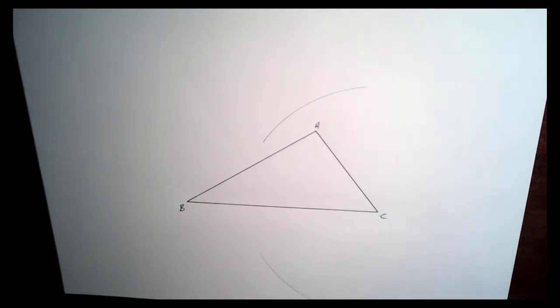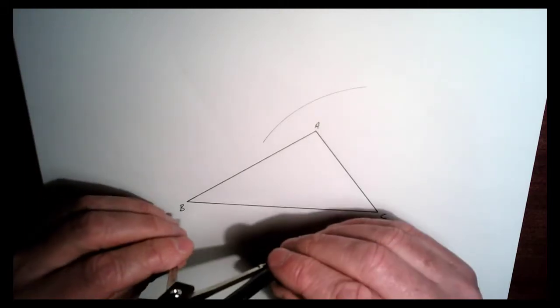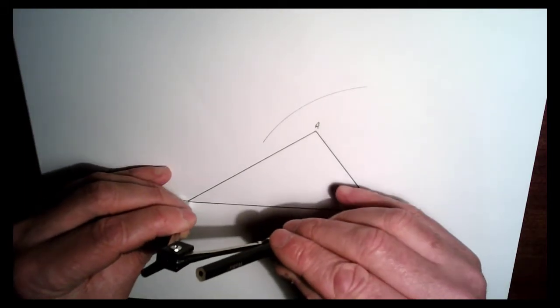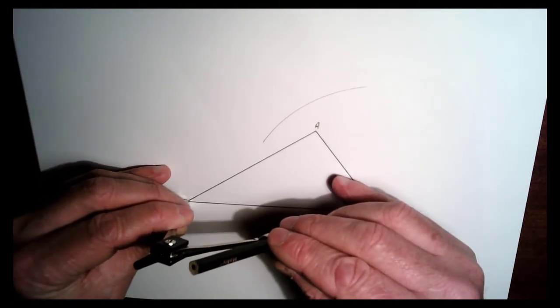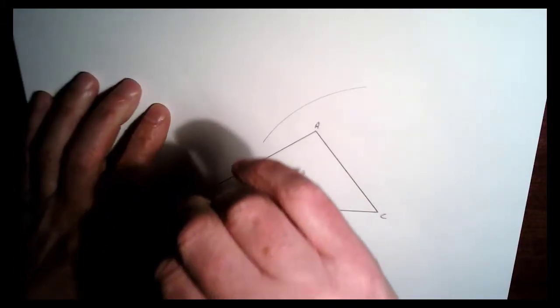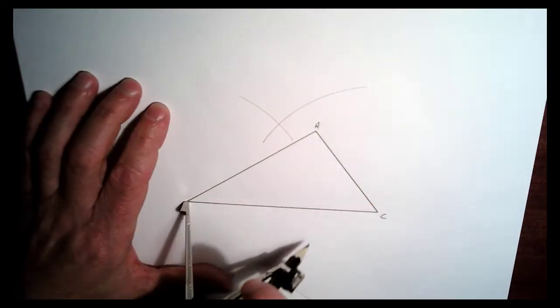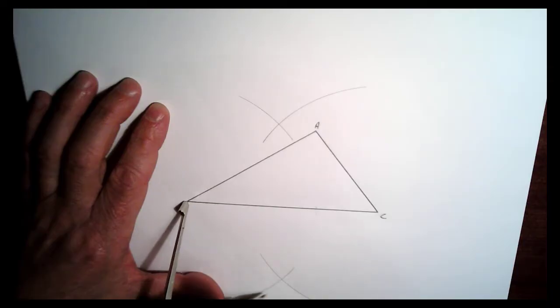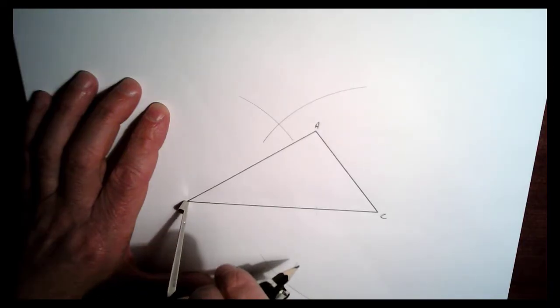So lift the compass and do the same thing on the other side. Don't move the compass in or out. So place the compass here at B, draw another arc up here and another one down here so that the arcs intersect.